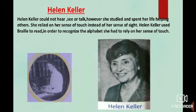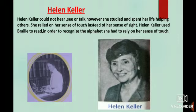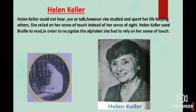Helen's teacher also taught her to speak. Helen had lost the ability to speak because she had not heard sound for a long time. She touched her teacher's face and mouth when her teacher spoke, and then touched her own face and mouth to say the same word. It was a slow and difficult process, but finally Helen began to speak. She relied on her sense of touch instead of sight. Helen Keller used Braille to read — to recognize the alphabet she had to rely on her sense of touch.